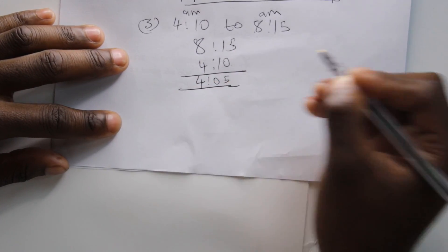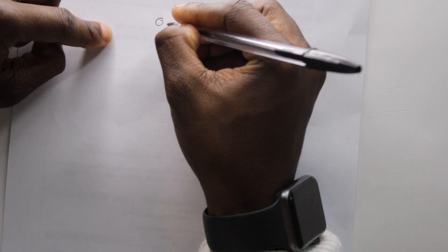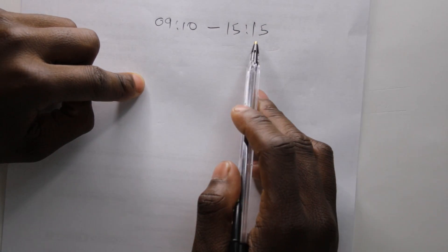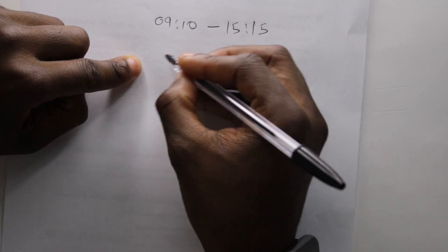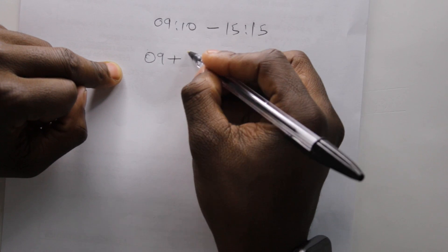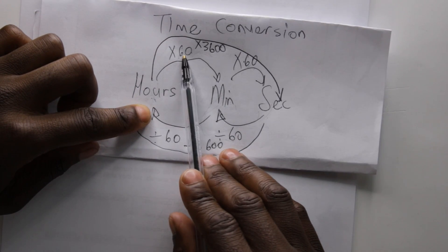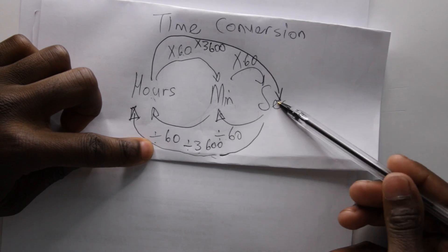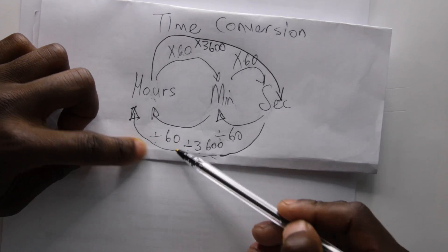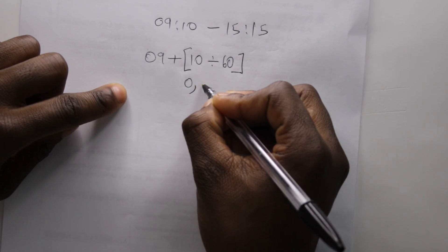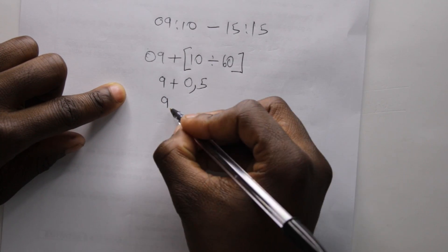And now we're going to convert the elapsing time from AM to PM. If we have 9:10 to 15:15, 9 minutes past 10 to 15 minutes past 3. We must convert the minutes to hours. Back to our metric system time, hours to minutes you times by 60, minutes to seconds you times by 60, seconds to minutes you divide by 60, minutes to hours you divide by 60. Now we have 10 minutes, we must divide by 60, we'll get 0.5. We must add to the 9 which is 9.5 hours.